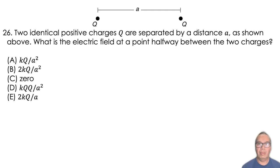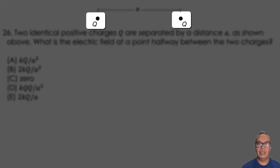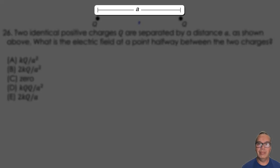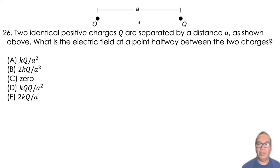Two identical positive charges Q are separated by a distance A, as shown above. What is the electric field at a point halfway between the two charges?